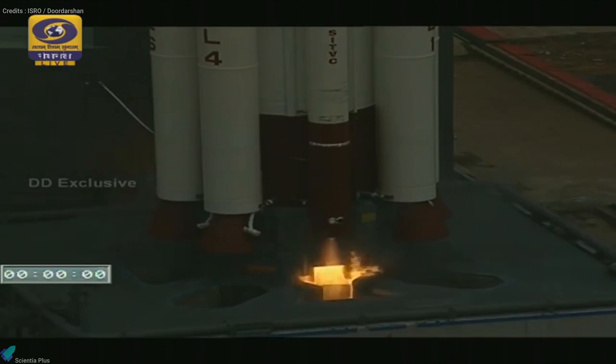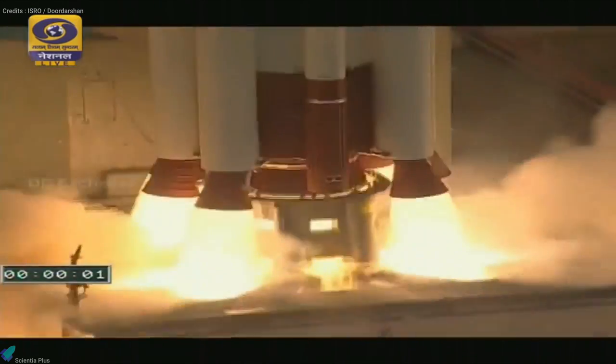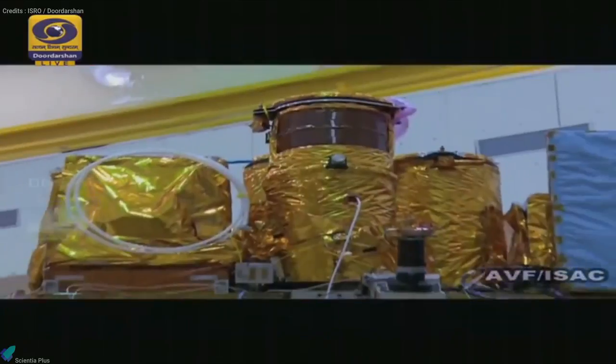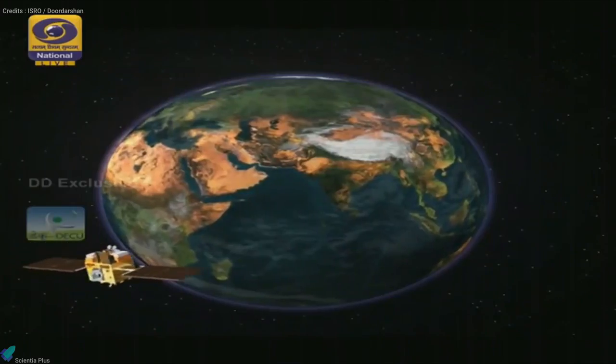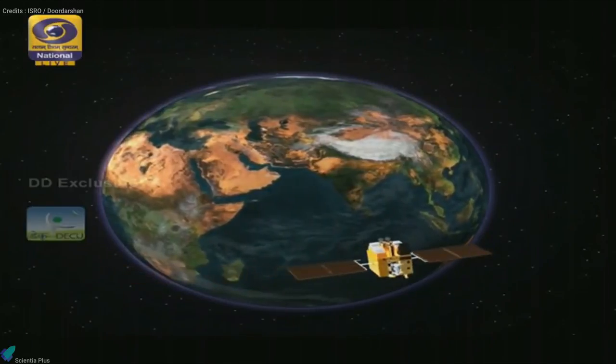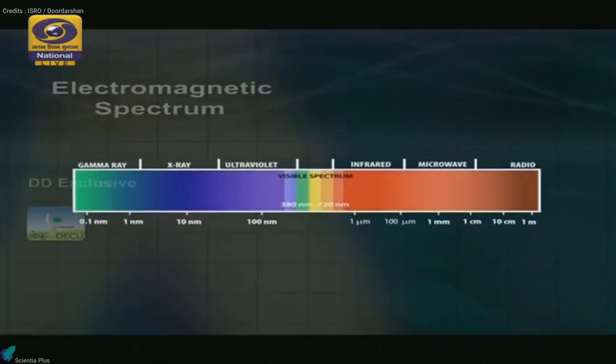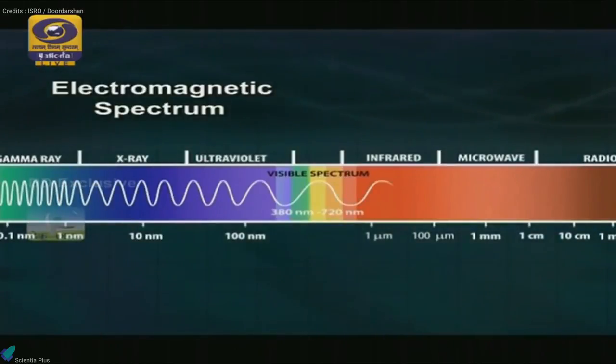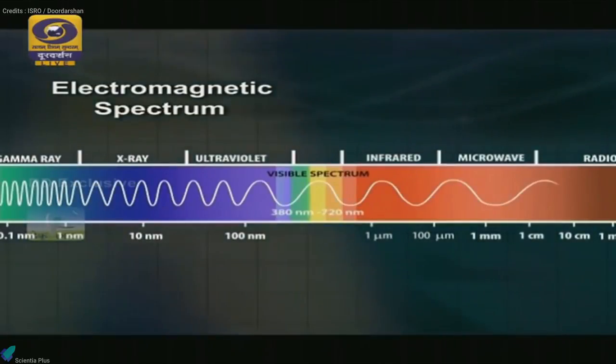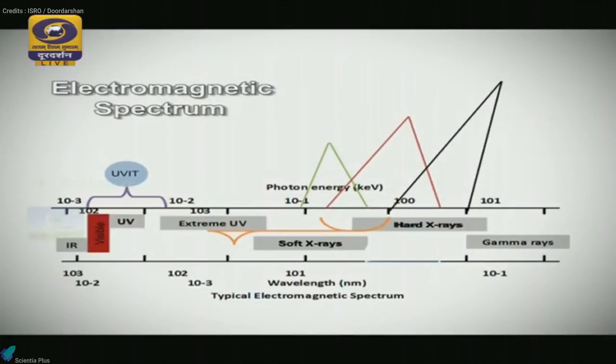The 1,500 kg AstroSat, launched on 28 September 2015 by ISRO, is India's first dedicated multi-wavelength space telescope. One of the unique features of AstroSat is that it is capable of simultaneous multi-wavelength observations of various astronomical objects with a single satellite. AstroSat can observe the universe in the visible, ultraviolet, and X-ray regions of the electromagnetic spectrum.